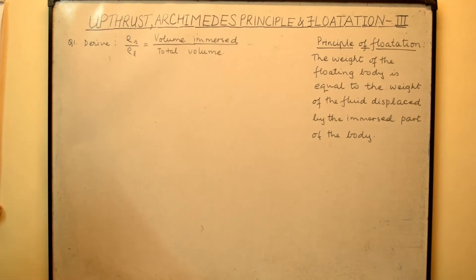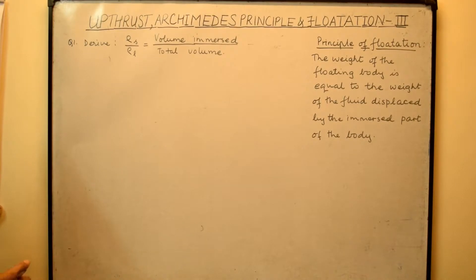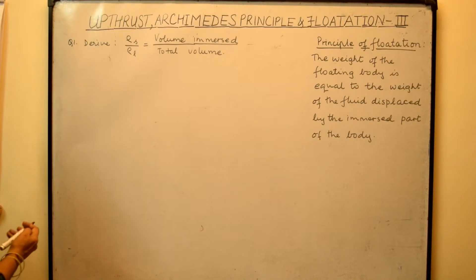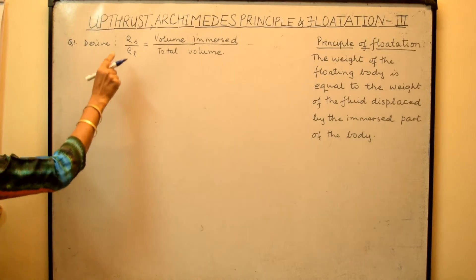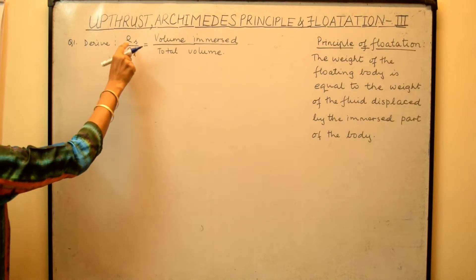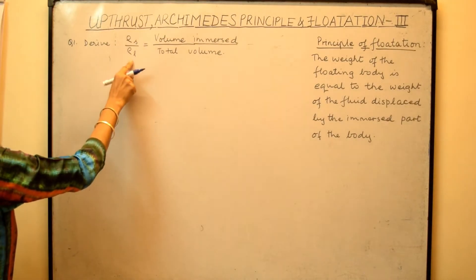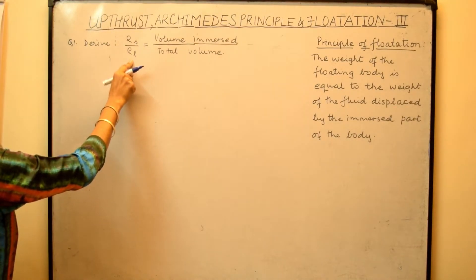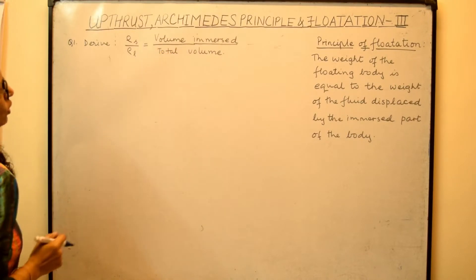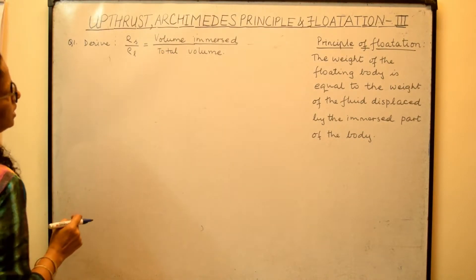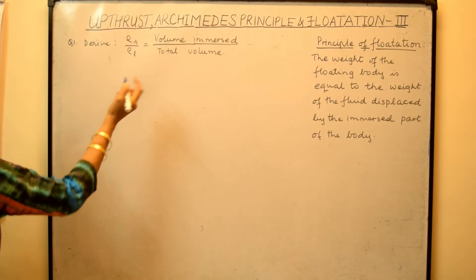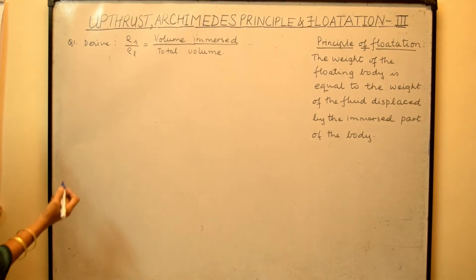In other words, the weight of the floating body is equal to the upthrust. Our first numerical under this is to derive the formula: density of solid upon density of liquid is equal to the volume immersed upon the total volume.